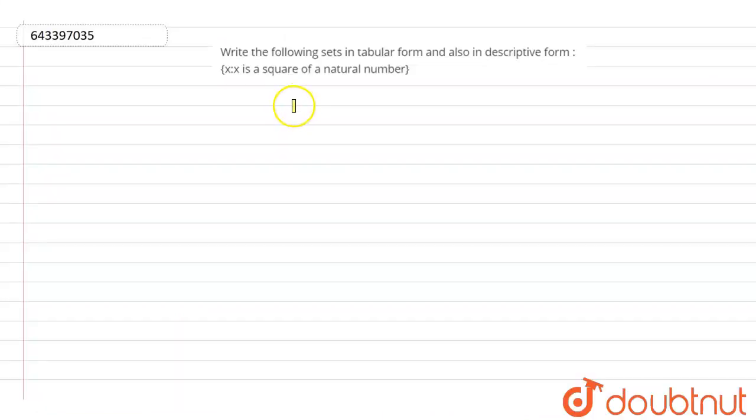Hello everyone, let us start the question. The question says, write the following sets in tabular form and also in descriptive form. X such that X is a square of a natural number.